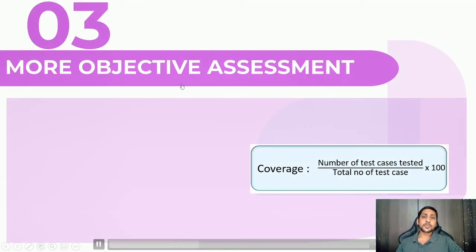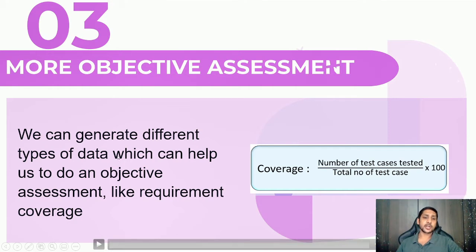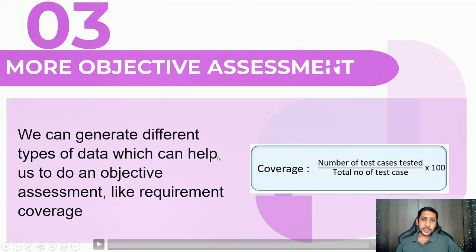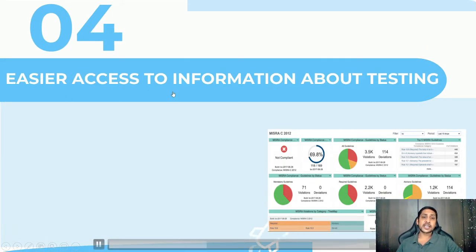The third benefit is more objective assessment. With a tool, we can generate different types of data to help with objective assessment, such as requirement coverage. Coverage is the number of test cases tested divided by the total number of test cases, multiplied by 100 for a percentage. We can do this manually, but with a tool you set some attributes and instantly see how many requirements are linked, how many test cases are executed, and how many passed or failed — all the data is just a click away.